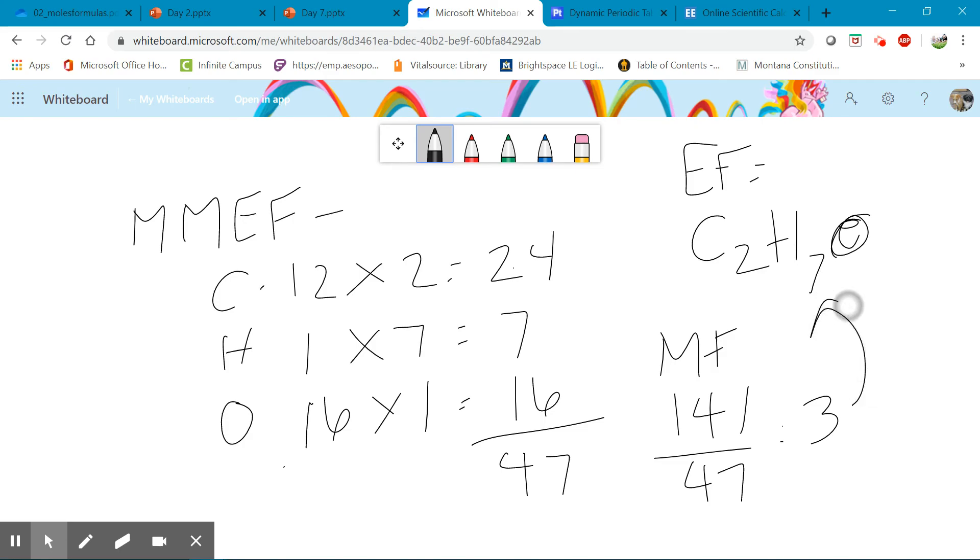So that means that we just multiply everything here by 3. So we end up with C6, that's supposed to be a 6, H21, O3 for our molecular formula then.